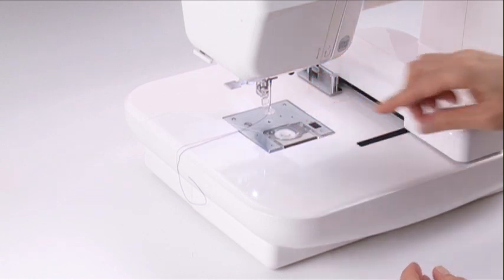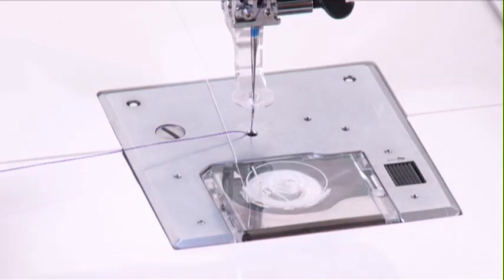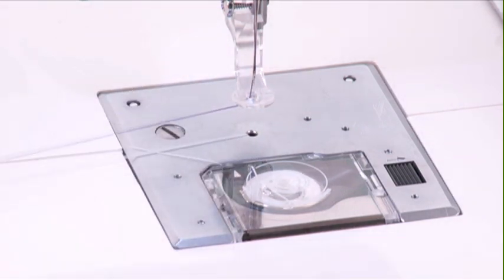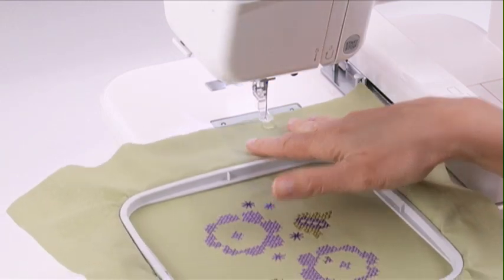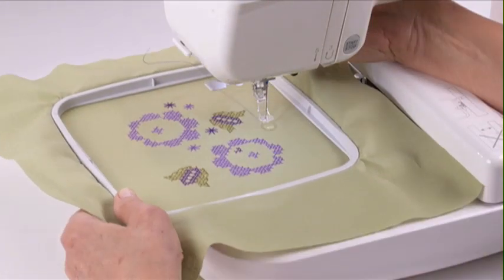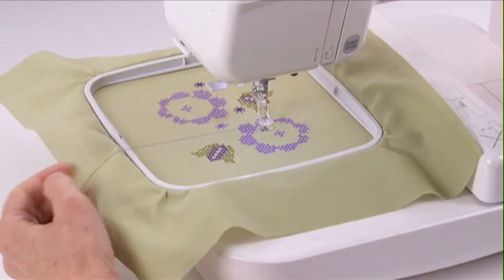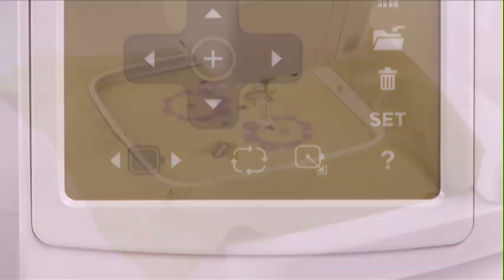Draw up the bobbin thread, replace the hoop, lower the presser foot lifter, back up stitches if necessary, then resume stitching.